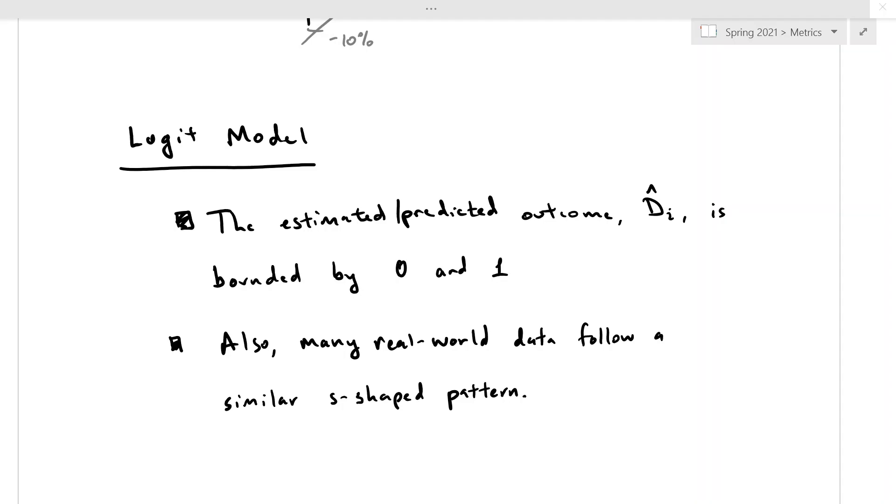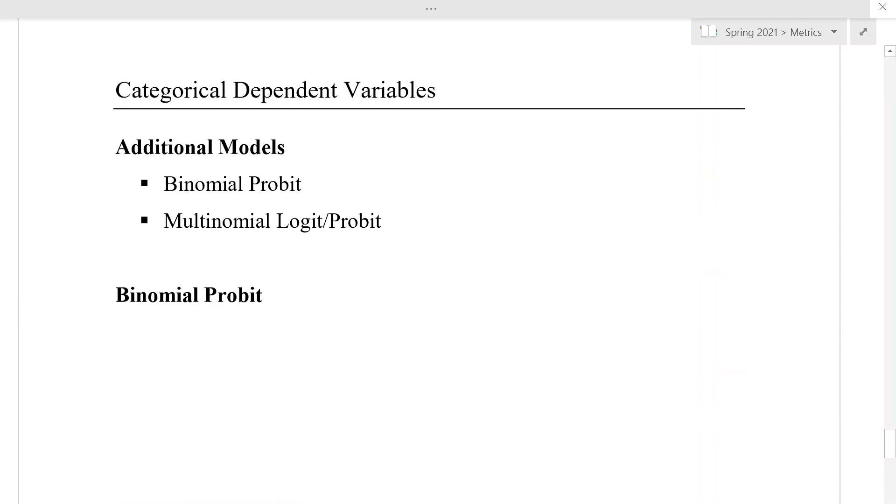Okay, and so finally, we're just going to wrap up really briefly. I won't get into too many details here, because the probit model is going to be very similar to the logit model, and then I'll just really quickly discuss multinomial, where our Y could take on a variety of outcomes, say red, green, or blue,